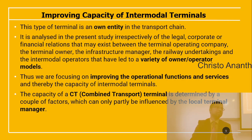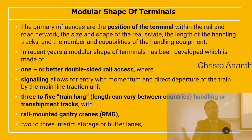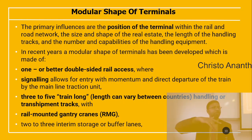The capacity of the combined transport terminal is determined by several factors influenced by the local terminal manager. The primary factors are: the position of the terminal within the rail and road network, the size and shape of the real estate, the length of the handling tracks, and the number and capabilities of the material handling equipment (MHE). In recent years the modular shape of terminals has been developed — featuring double-sided rail access, signaling that allows entry with momentum and direct departure by mainline traction unit, three to five train-length handling or transshipment tracks, and rail mounted gantry (RMG) cranes, with two or three interim storage buffer areas.